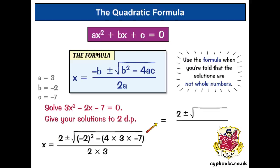Okay, what's in the square root sign? We've got minus 2 squared. Well, minus 2 times minus 2 is 4. And then, we've got in the bracket, we've got 4 times 3, which is 12, times minus 7. Well, 12 times 7 is 84, times minus 7 is minus 84. So, we've got minus minus 84. And that's over 6.